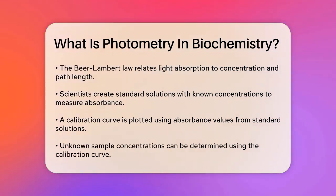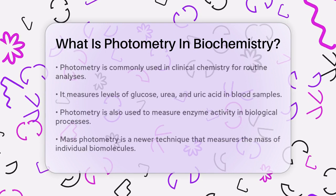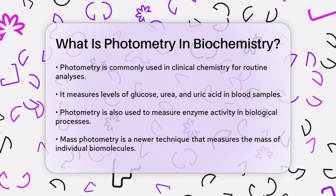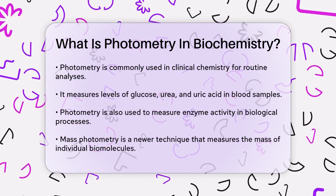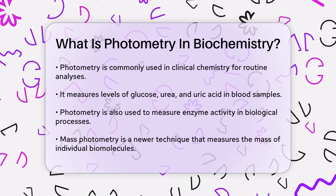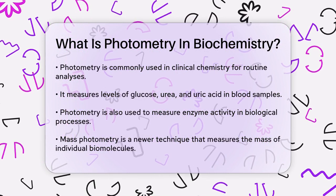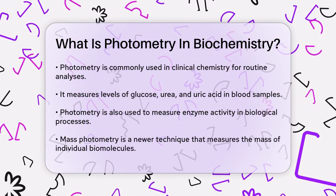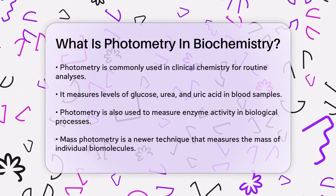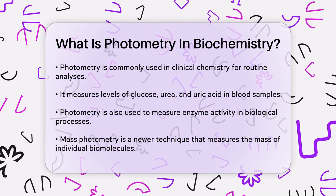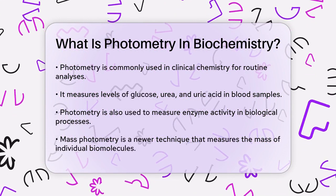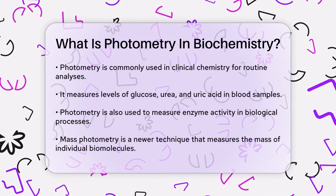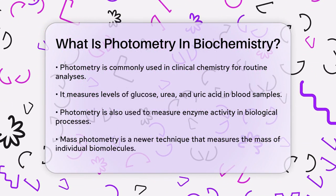Photometry is widely used in clinical chemistry for routine analyses. For example, it's used to measure the levels of glucose, urea, and uric acid in blood samples. It's also essential in measuring the activity of enzymes, which are crucial for many biological processes.